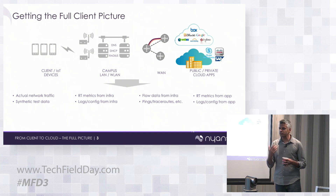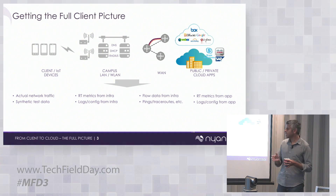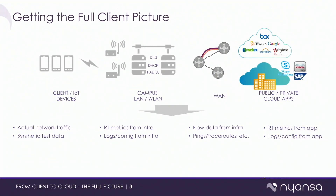All of those legs have a lot of data associated with them. With any system that's going to tell you something about client experience and what's happening with mobile clients, this is a sampling of data that's in the realm of possibility to process. From the client perspective you have actual network packets clients are sending, you can generate synthetic tests and measure their performance, you can get data from infrastructure — wireless LAN controller, switches, routers — log data, syslog from systems like the RADIUS server, NetFlow from the WAN, and traceroutes.